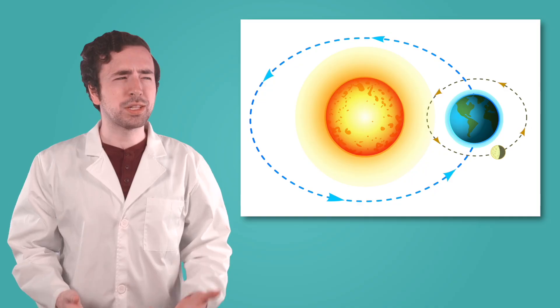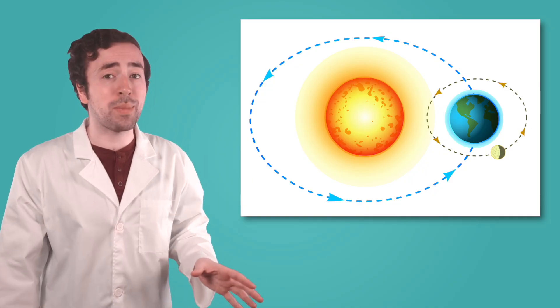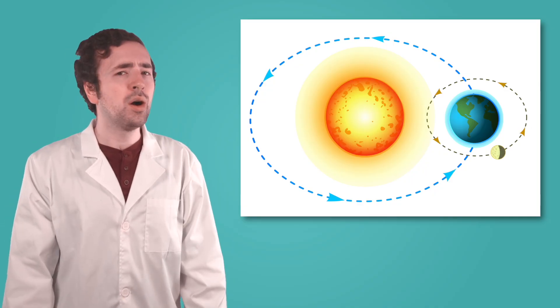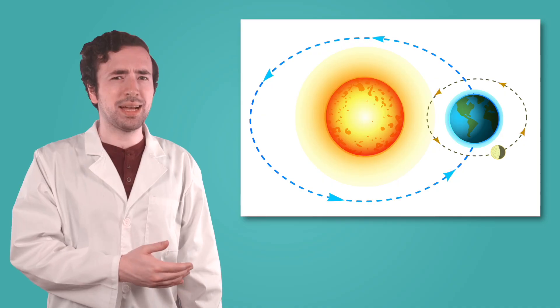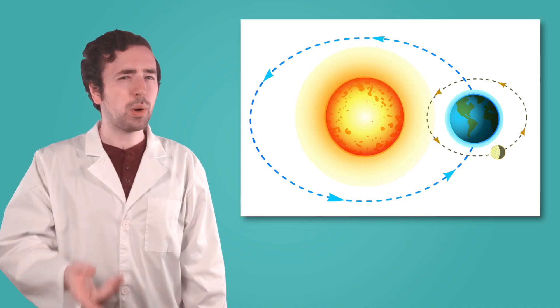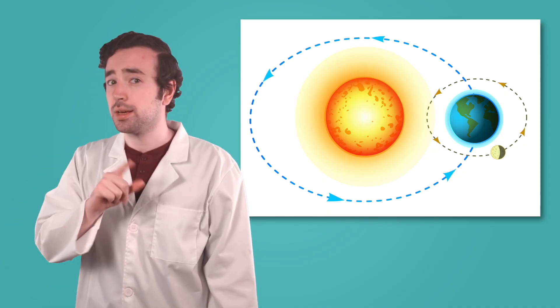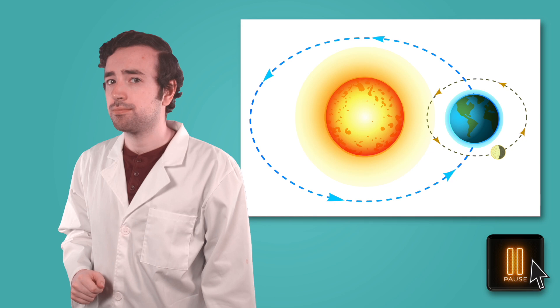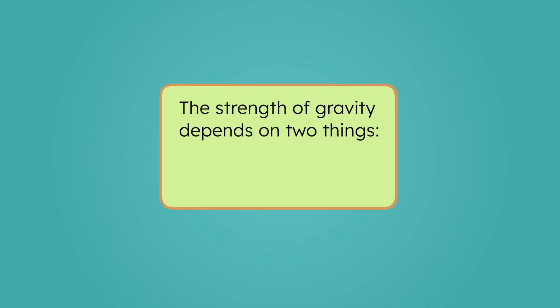But wait, the sun has way more mass than any planet, so why do moons orbit planets at all? Pause the video and record your thoughts in your guided notes. Well, it isn't just about mass. The strength of gravity depends on two things. Mass and distance.